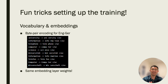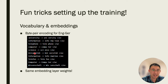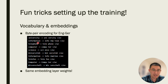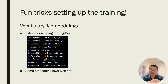A fun trick they use is byte-pair encoding for English and German, which is fascinating because English and German share a lot of roots — 'university' can be split into 'uni-versity,' and in German 'Universität' also shares 'uni.' They used a mixed dictionary of English and German so they can use the same embedding layer weights for the input of the encoder and the output of the decoder, which saves a lot of model weights and training time.